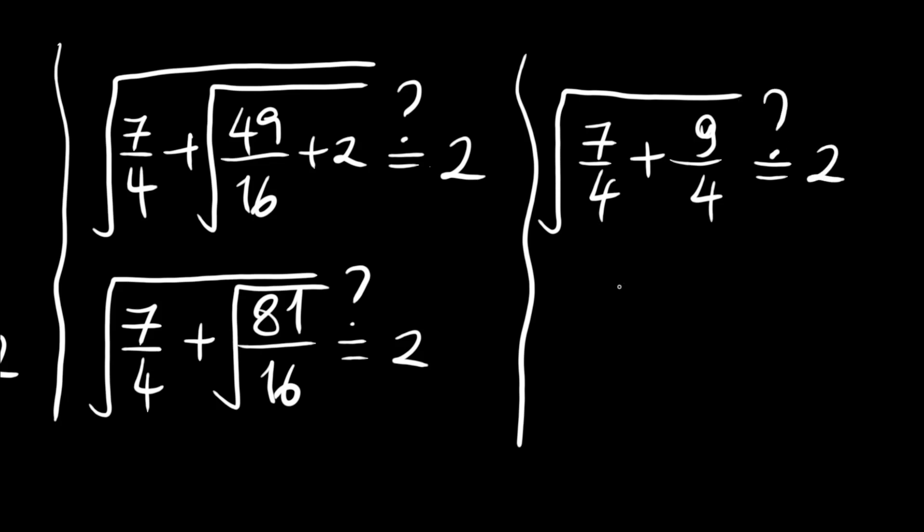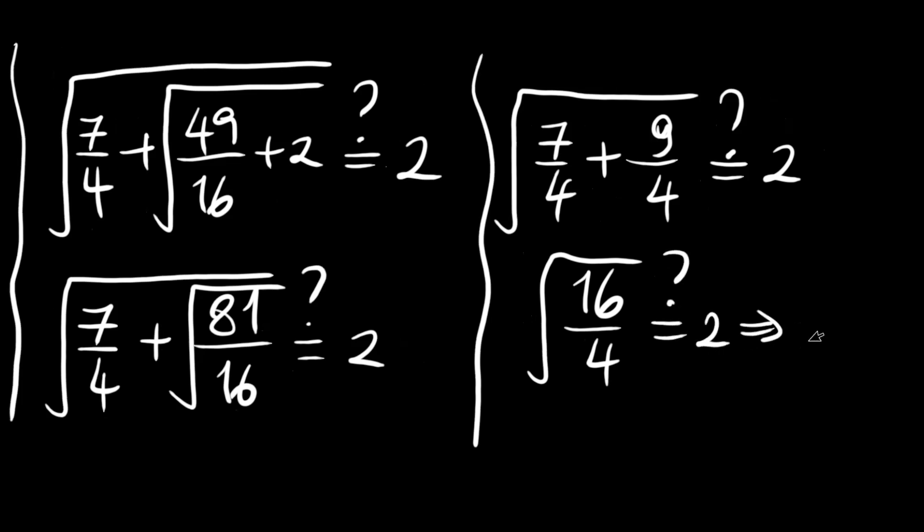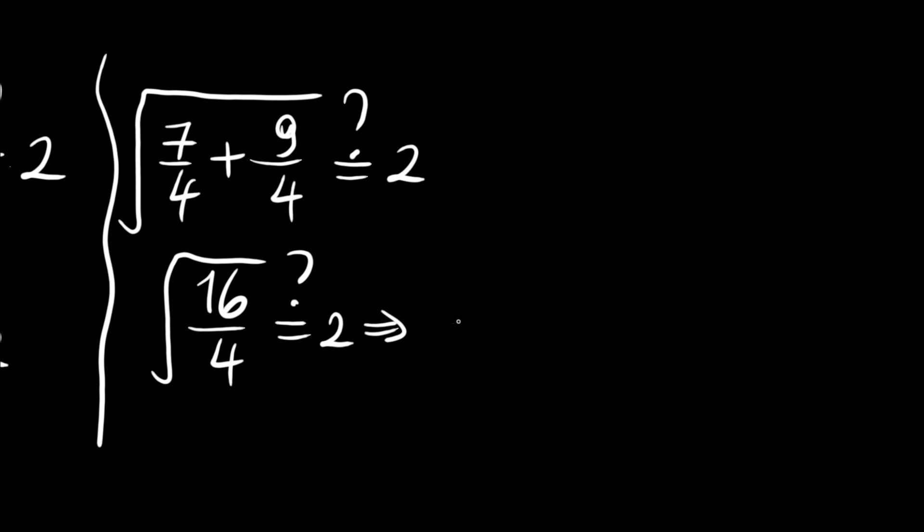The square root of 4 equals 2, so 2 equals 2, which confirms our answer. The result is x equals 7 over 4. Thank you for watching, and see you in the next videos.